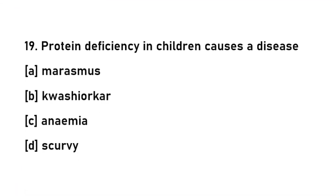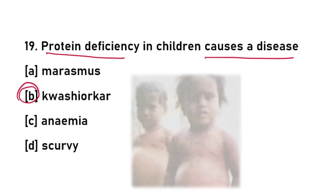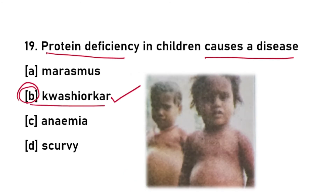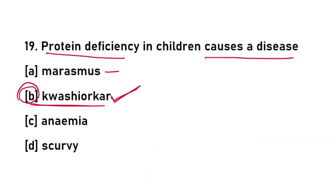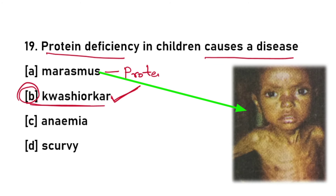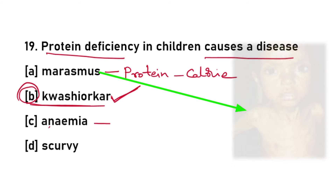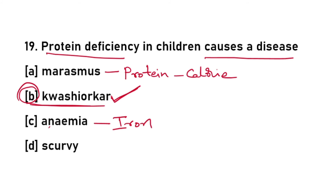Nineteenth question: protein deficiency in children causes a disease called kwashiorkor. Marasmus is caused due to the deficiency of both proteins and calories (carbohydrates). Anemia is caused due to the deficiency of iron, and scurvy is caused due to the deficiency of Vitamin C.